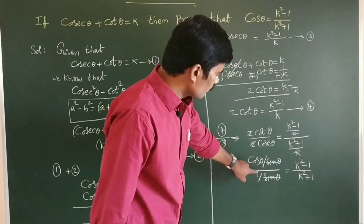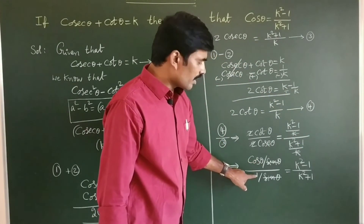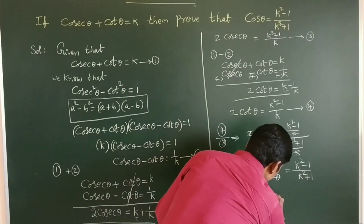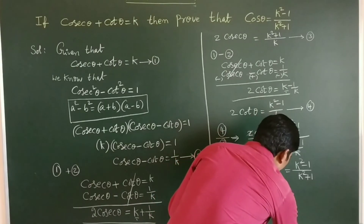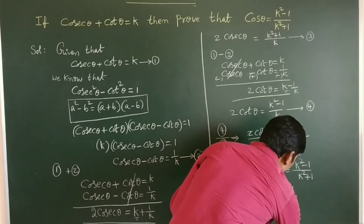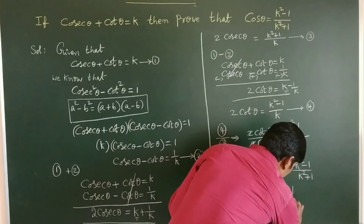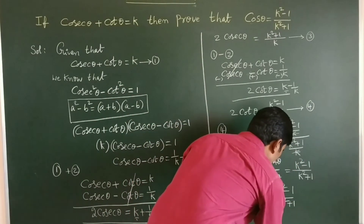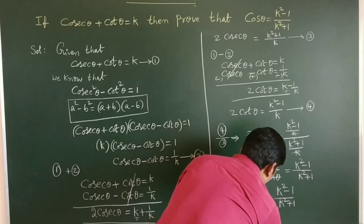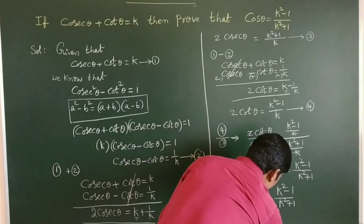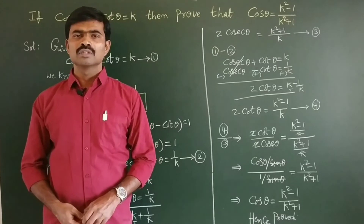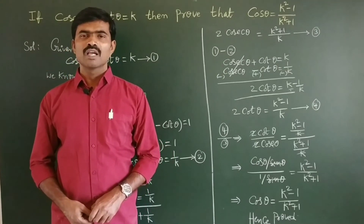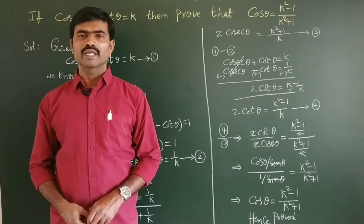Cos theta is equal to k squared minus 1 by k squared plus 1. So this is the proof of this problem. Hence proved. If you like this video, please like it and share it with those who need math basics, and subscribe for more videos. Thank you for watching.